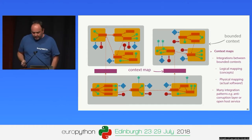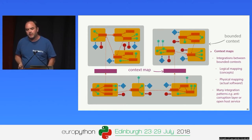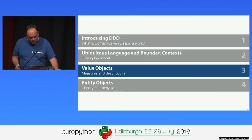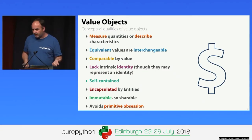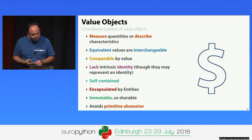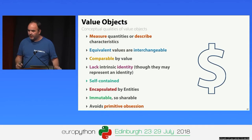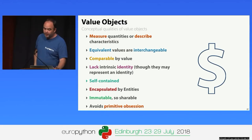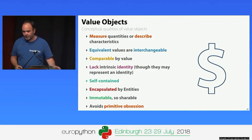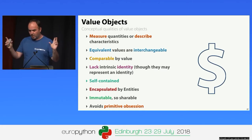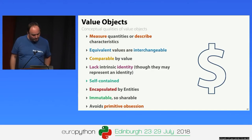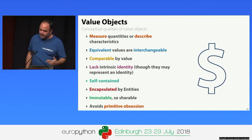Let's look at value objects — just about the simplest pattern in tactical domain-driven design. Value objects are used to measure and describe things in the domain, like a currency value or a telephone number. Equivalent values are interchangeable — we don't care about the identity of the object, we care about its value. They're comparable by value and lack an intrinsic identity. If we have two strings containing the same name, the fact that they're equal is what matters; that they're different objects is irrelevant. They're self-contained and normally encapsulated and owned by entities.